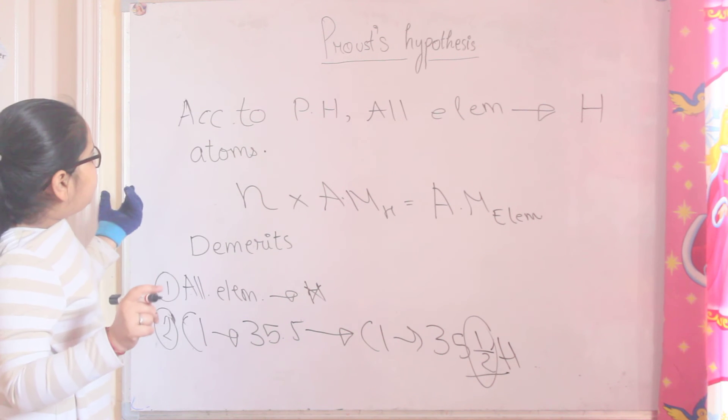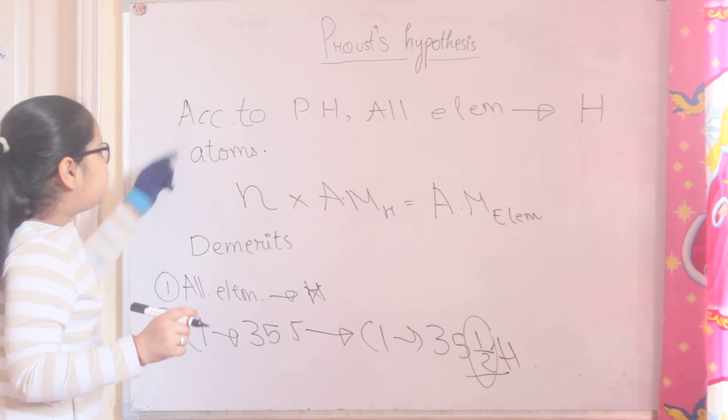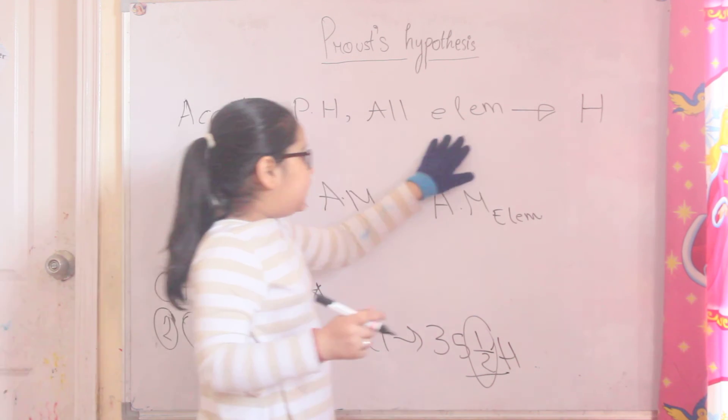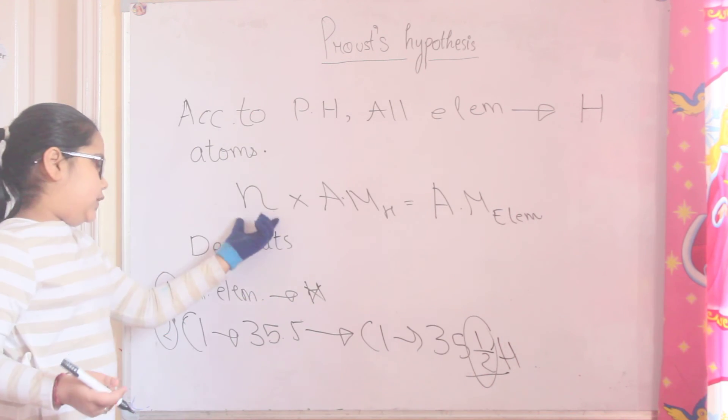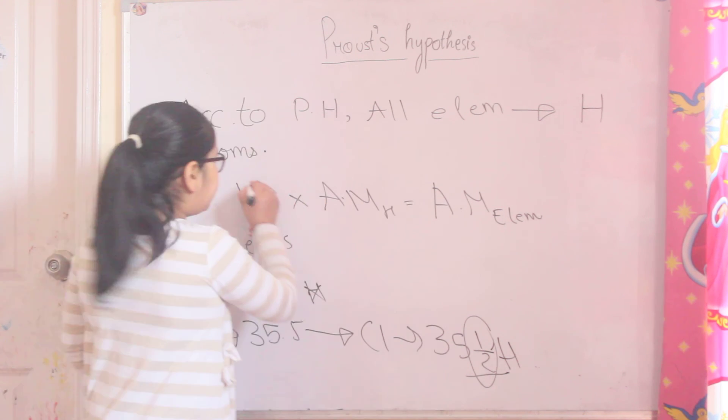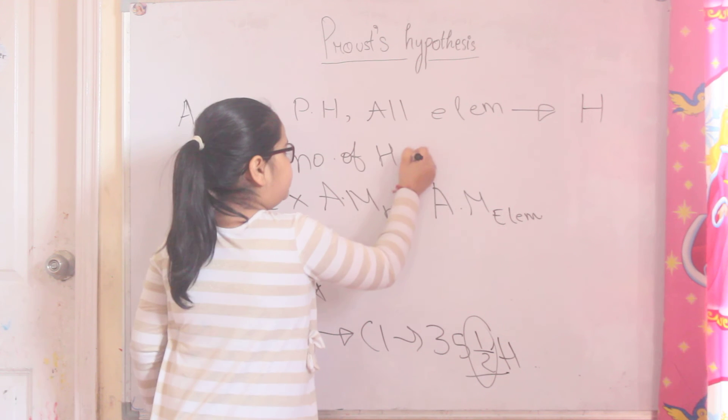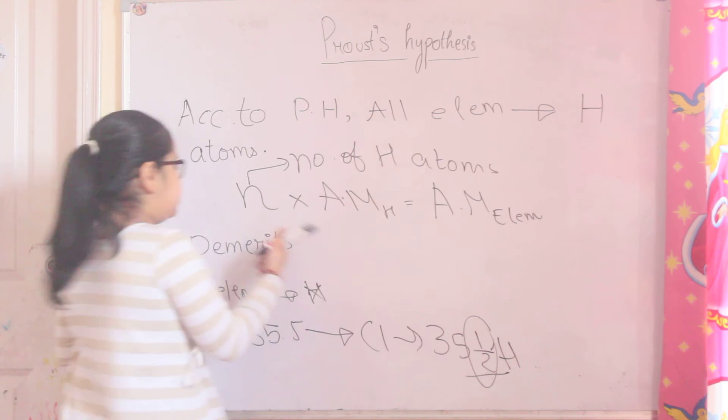So in the exam, there is no question. According to Proust's hypothesis, all elements are made up of hydrogen atoms. And you can write n into atomic mass of hydrogen is atomic mass of elements. N is nothing but the number of hydrogen atoms.